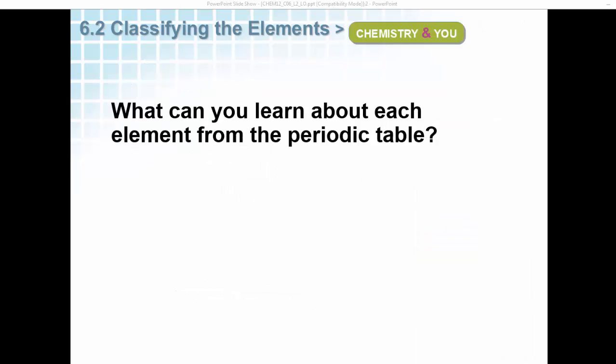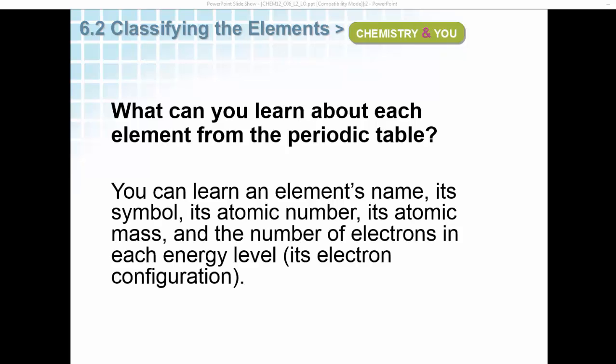What can you learn about each element from the periodic table? You can learn an element's name, its symbol, its atomic number, its atomic mass, and the number of electrons in each energy level, also known as its electron configuration.